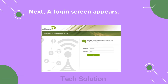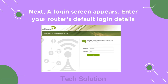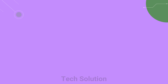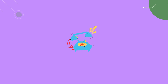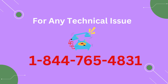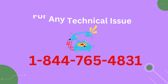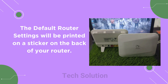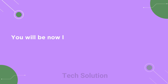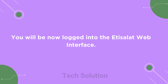A login screen appears. Enter your router's default login details — enter admin for both username and password and click Login. Note: the default router settings will be printed on a sticker on the back of your router. You will now be logged into the Etisolet web interface.